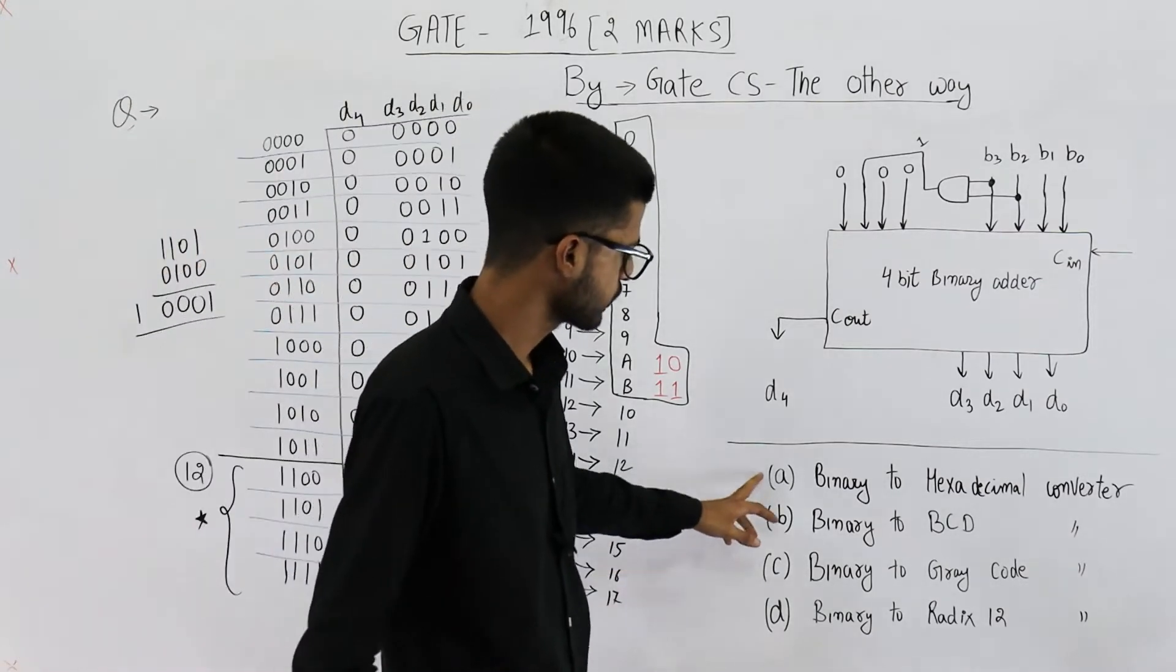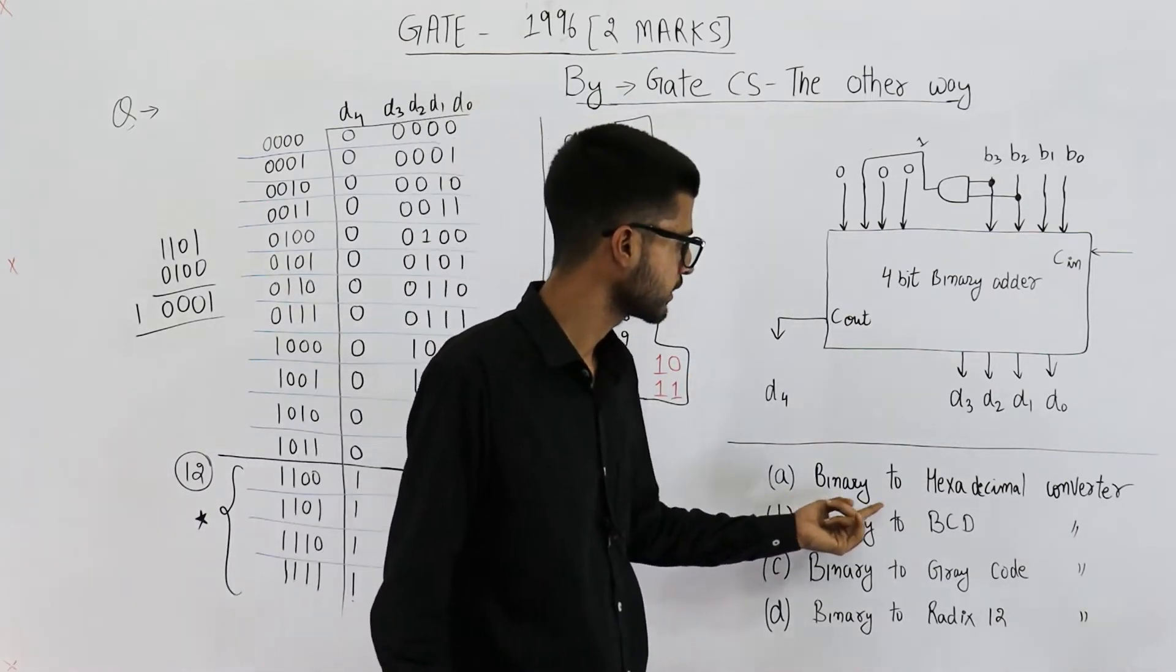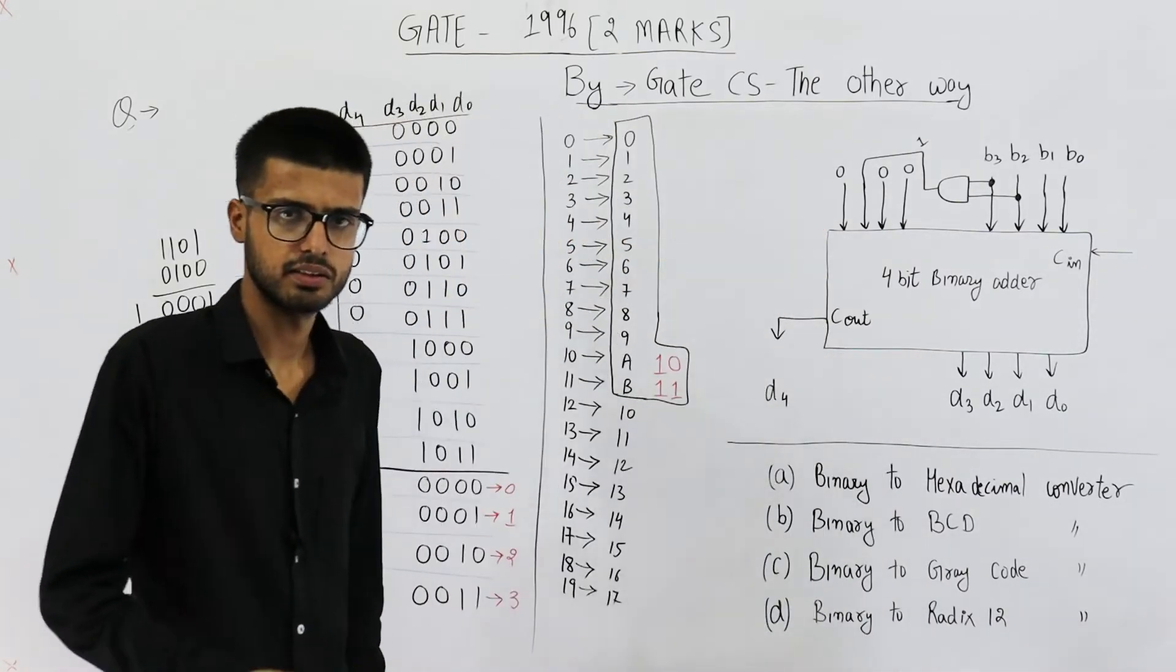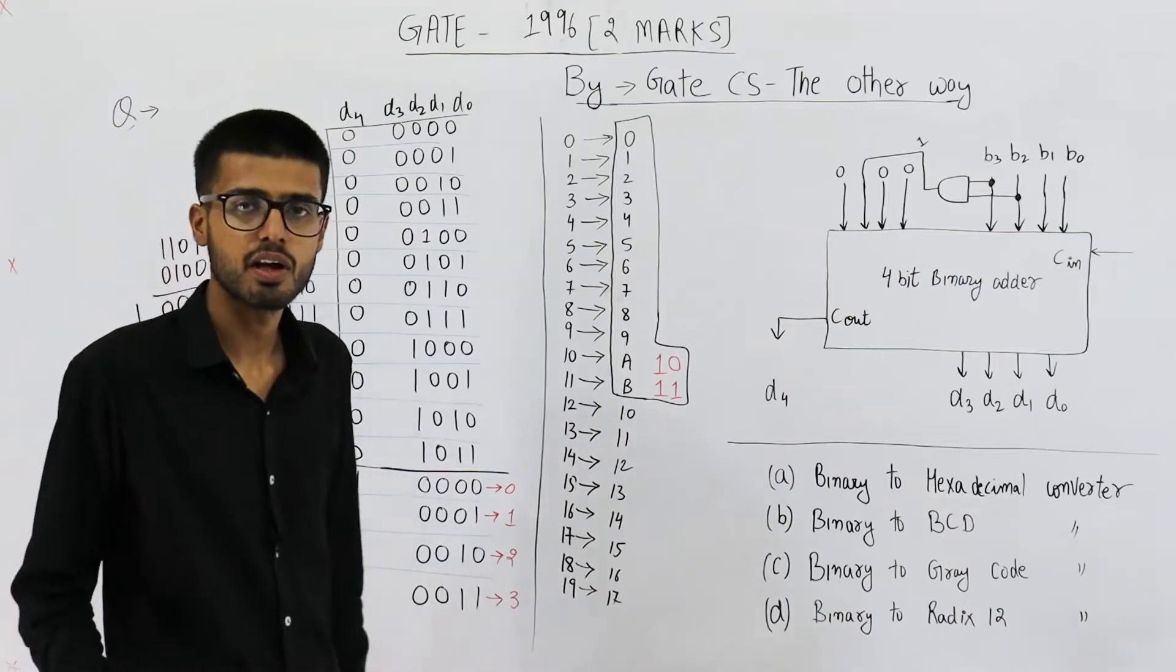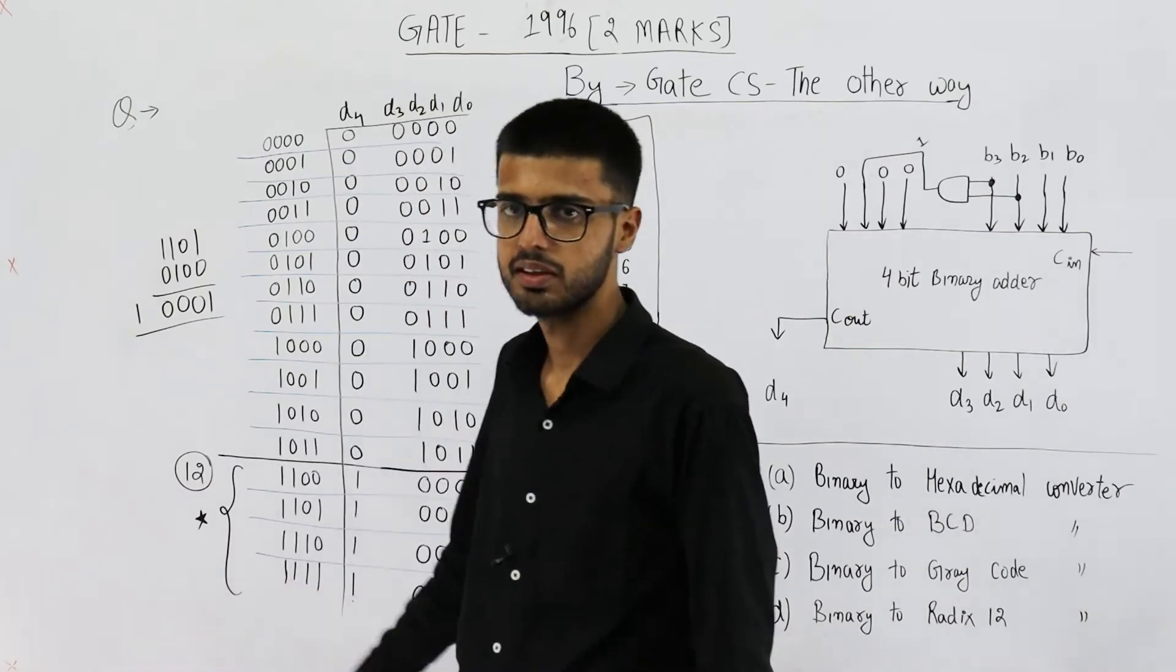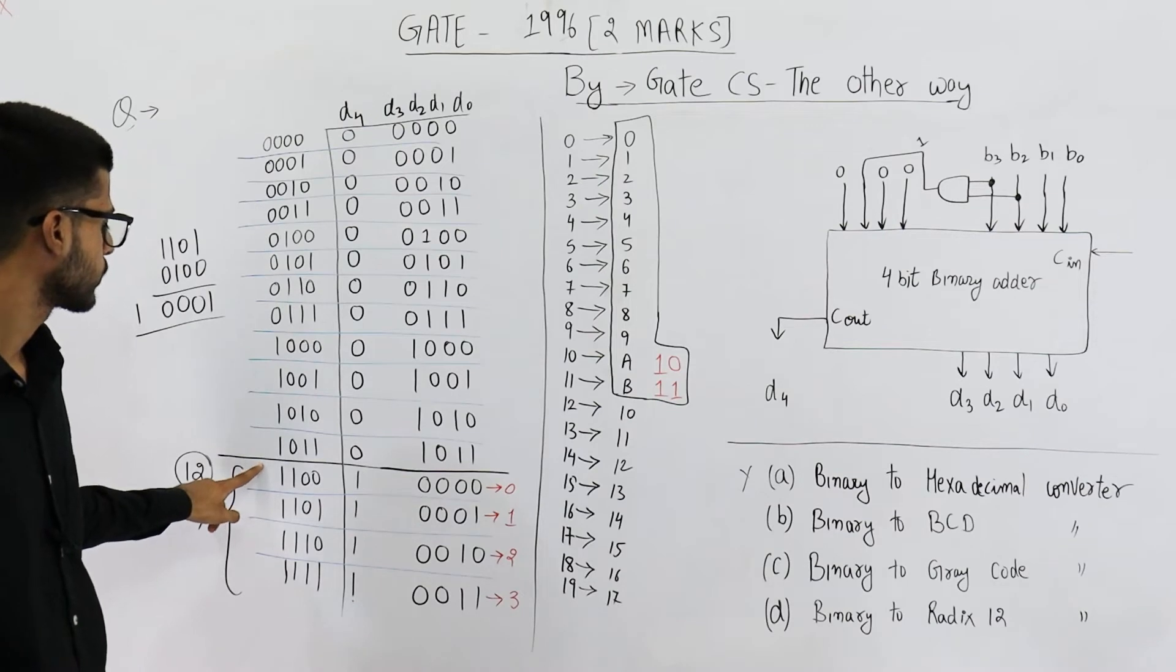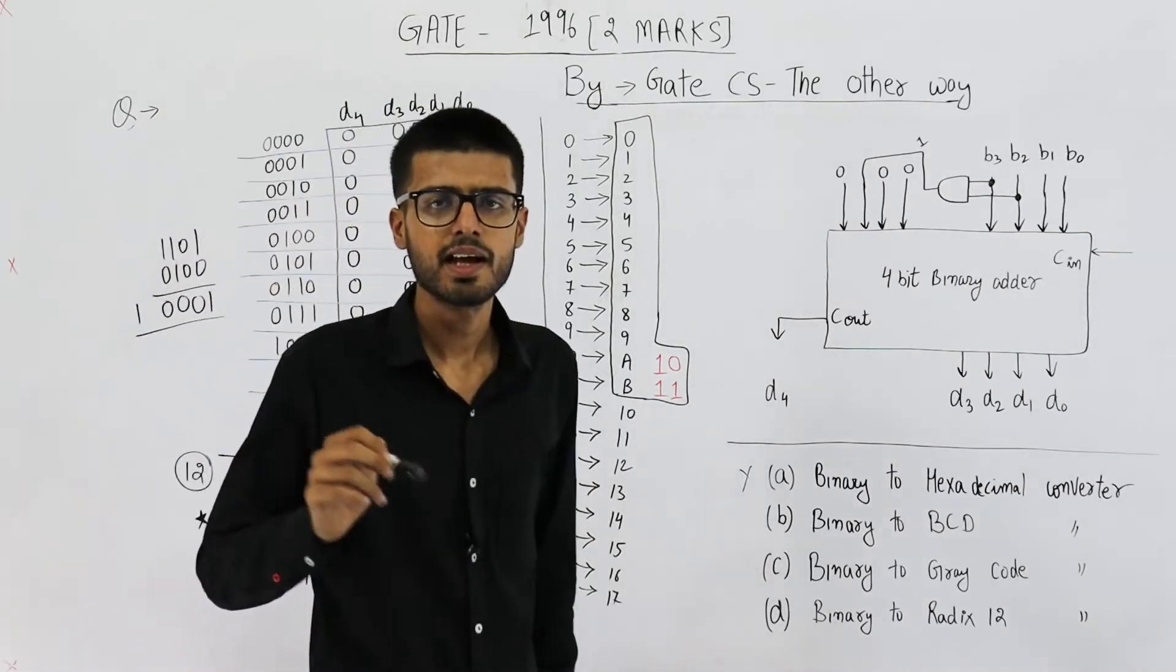Now, let us analyze which of these 4 options is correct. You can see first option says binary to hexadecimal converter. It doesn't seem like a hexadecimal converter. In hexadecimal numbers, we have A, B, C, D, E, F. For 10, we have A. For 11, we have B. For 15, we have F. The output must be F. But here we only have binary bits. So we don't have A, B, C, D as output. This one cannot be a binary to hex converter. Moreover, you can see there is a change in pattern from this input. From 12 onwards, we are getting a different pattern in the output. So it has to do something with 12.